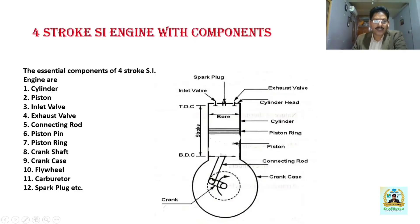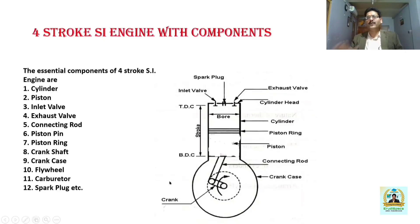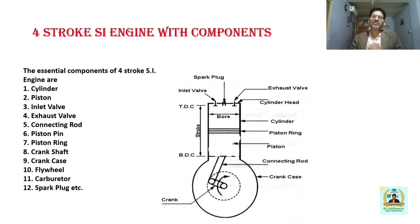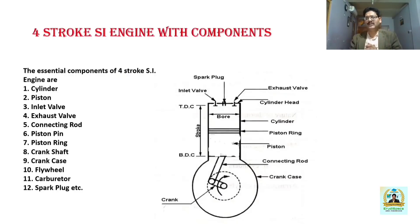You have the crankshaft, and then you have a crankcase, which provides housing to the crankshaft. There are components like flywheel and carburetor which have not been shown. The function of a flywheel is that it works as an energy accumulator — it stores the energy developed during the power stroke and supplies the same during the idle strokes. The function of a carburetor is that it prepares the air-fuel mixture and supplies the same to the inlet valve.